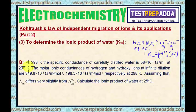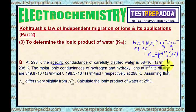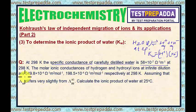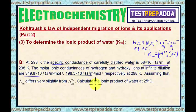The question says: at 298 Kelvin, the specific conductance of carefully distilled (pure) water is 58 × 10⁻⁷ Ohm⁻¹ m⁻¹. The molar ionic conductances of hydrogen and hydroxyl ions at infinite dilution are given respectively at 298 Kelvin. Assuming that λM differs very slightly from λM∞, calculate the ionic product of water at 25°C.